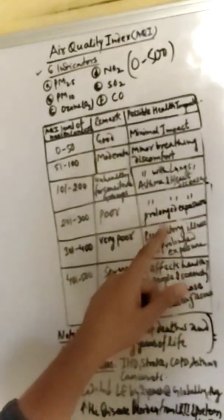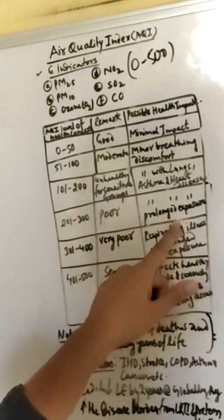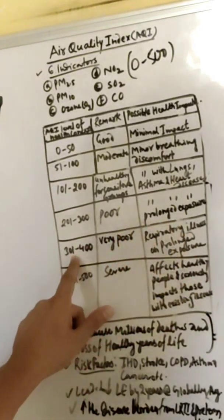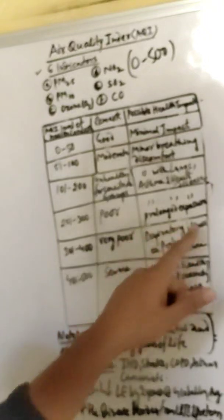Zero to 200, then problems will occur. 300 to 400 is very poor, causing respiratory illness with prolonged exposure.